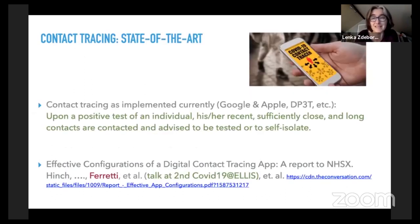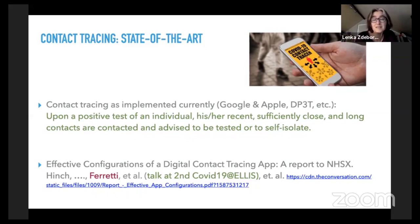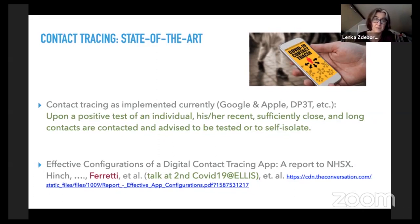The contact tracing that all of you have surely read about works as follows: it collects that information on the phone, and upon a positive test of an individual, his or her recent, sufficiently close, and sufficiently long contacts are contacted and either tested, advised to be tested, or advised to self-isolate — depending on the system. How this works and its advantages for the epidemic problem was something that Luca Ferretti covered in his talk.